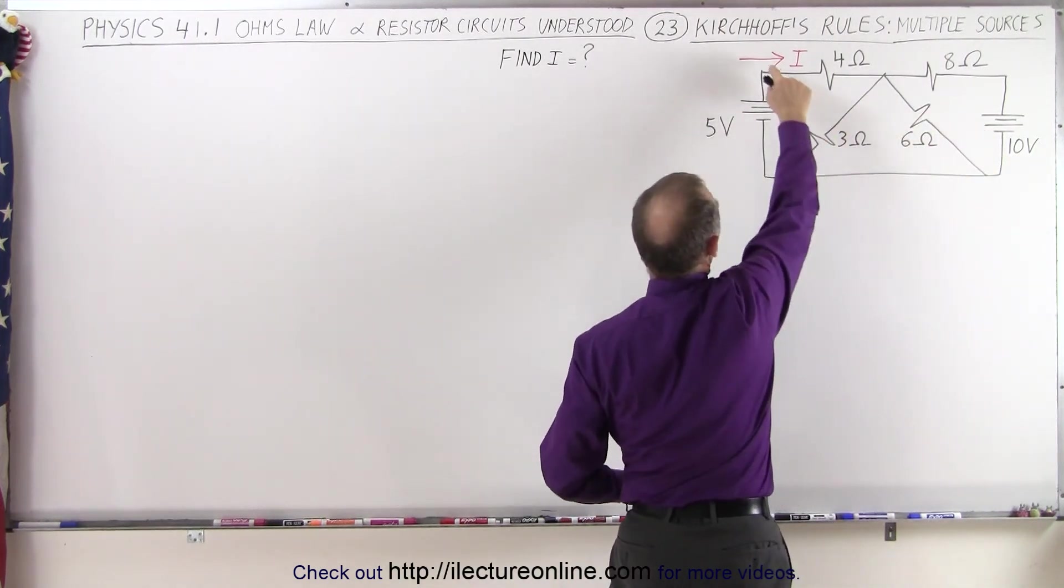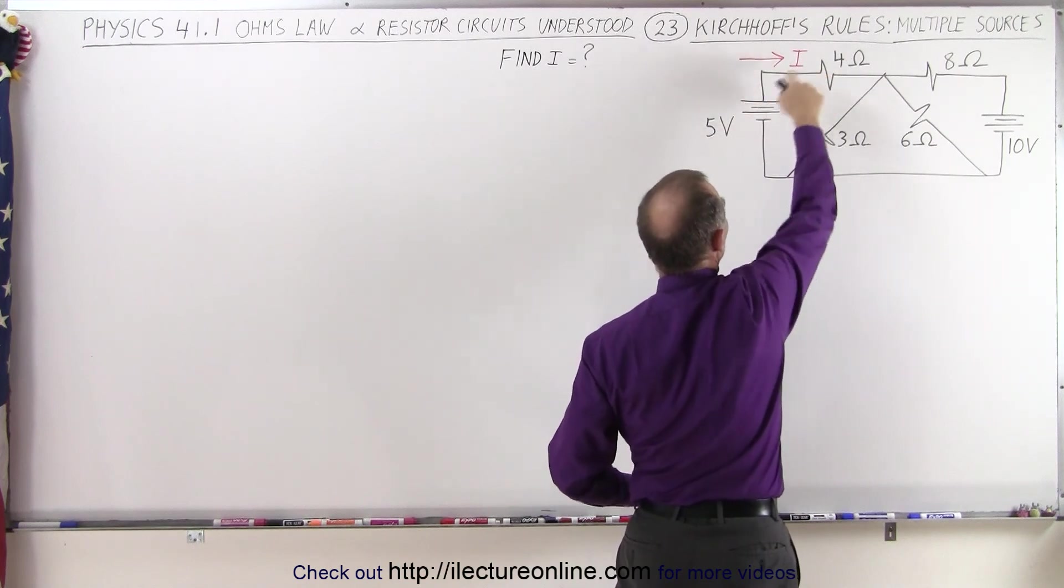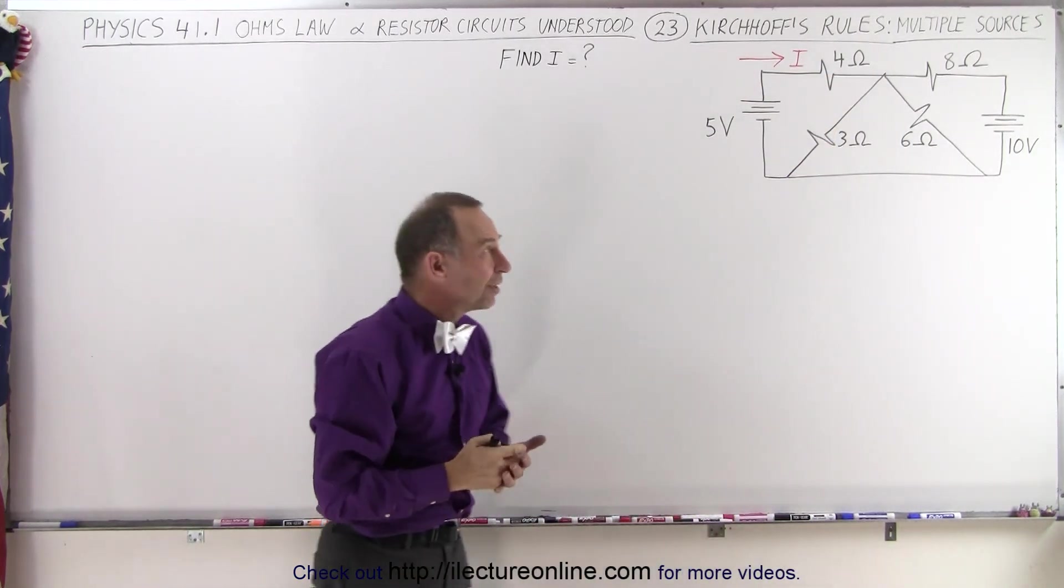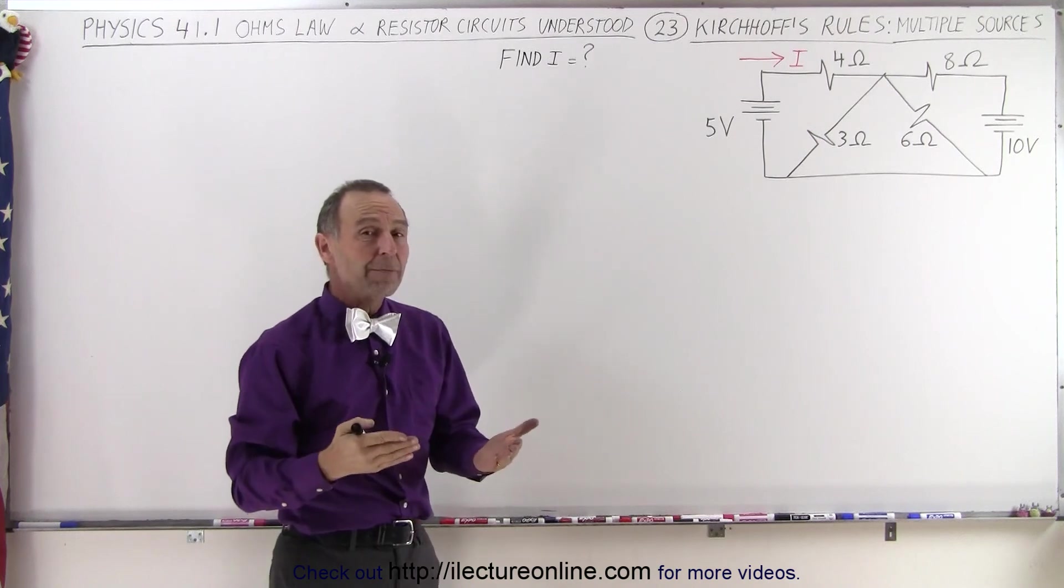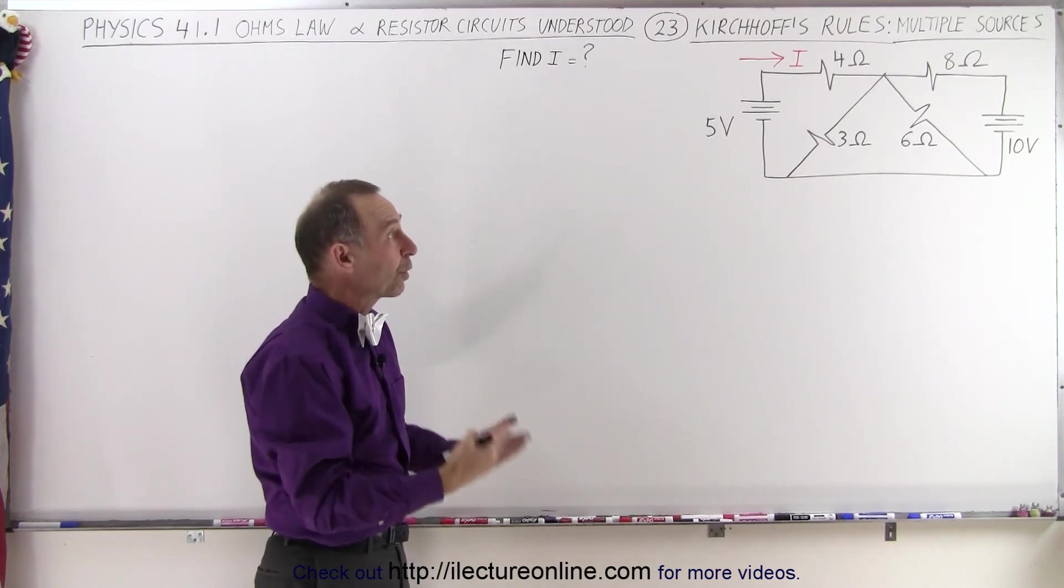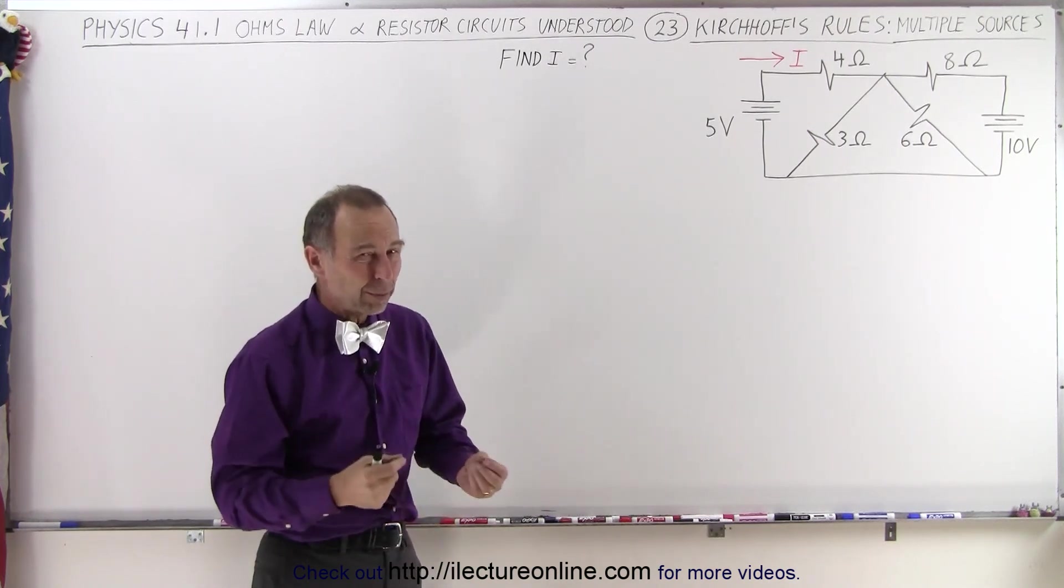We're only asked to find a current in this branch, but with three loops this may become a fairly difficult problem because that means we're going to end up with four equations and four unknowns. That would be quite difficult.